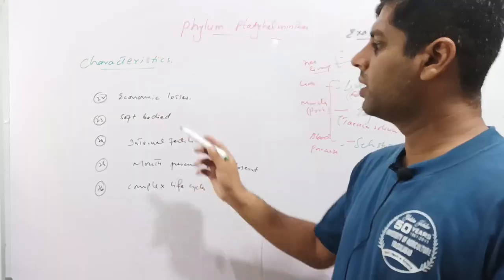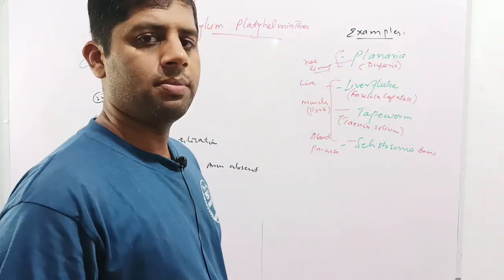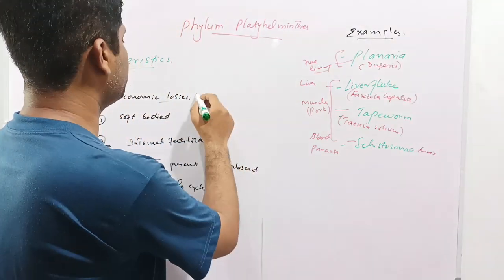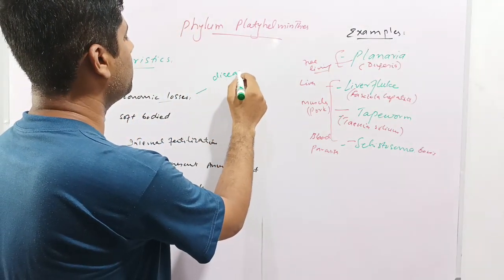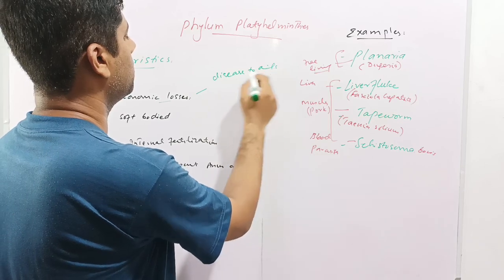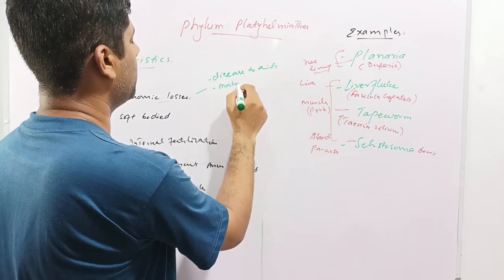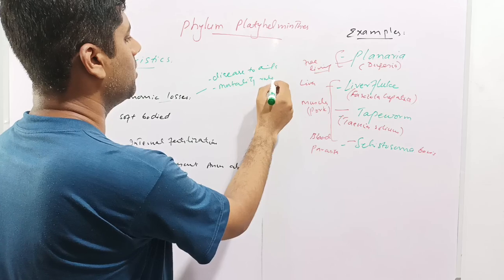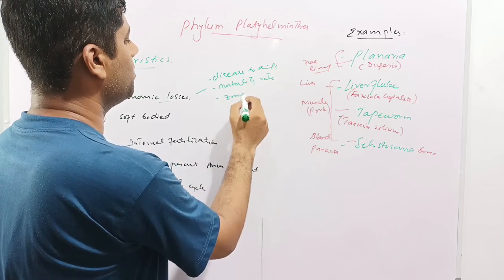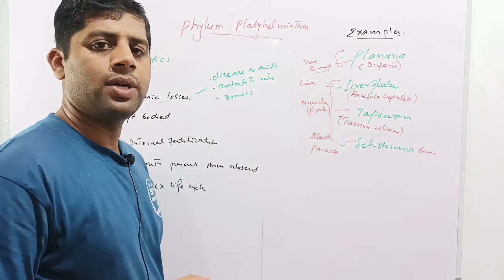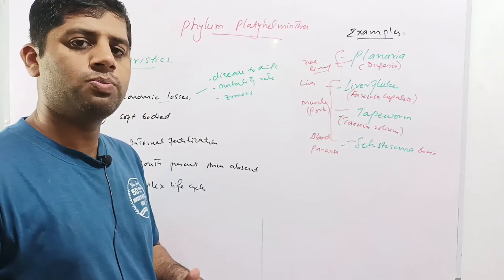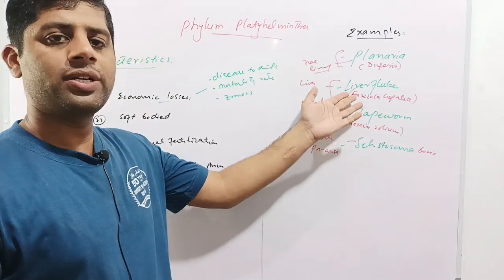Next is economic losses. The members of this phylum cause huge economic losses in terms of diseases to animals, mortality rate, and zoonosis. Zoonosis means transmission of infections from animals to human beings. For example, if we consume pork or liver of infected animals, these parasites Taenia and Fasciola will be transmitted to our bodies, causing various diseases and health hazards.